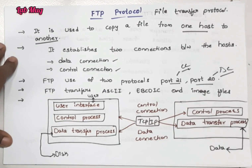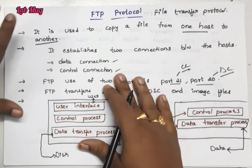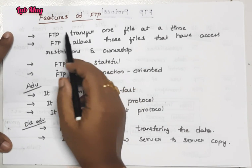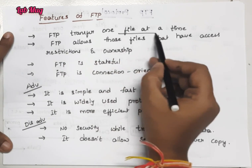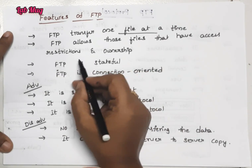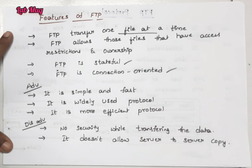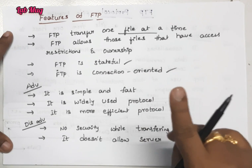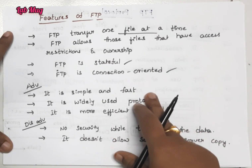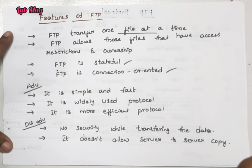This is the main concept of FTP protocol. Features, advantages, and disadvantages are important. FTP is stateful and connection-oriented. In the previous class, HTTP was stateless, but FTP is stateful. In the previous class, we explained one connection to maintain - that is stateless. Multiple connections to access - that is stateful. Here, entire true connections with multiple connections are based on stateful. Advantages: FTP is simple, widely used, and a more efficient protocol.